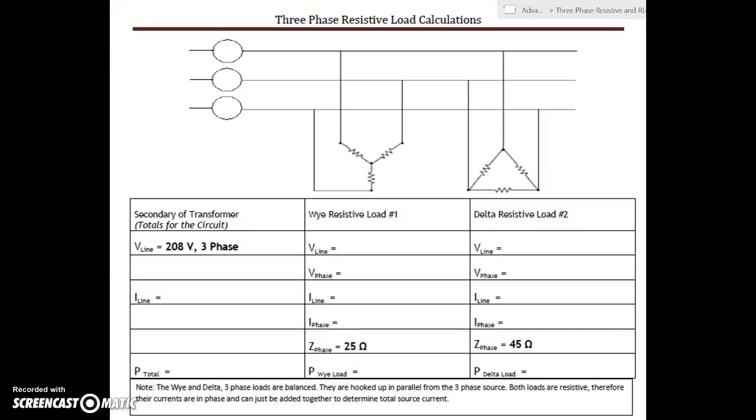All right guys, three-phase resistive load number two. This one has a wye resistive load and a delta resistive load, both being fed from 208 volts three-phase. So we have 208 volts three-phase as our source: line one, line two, and line three.